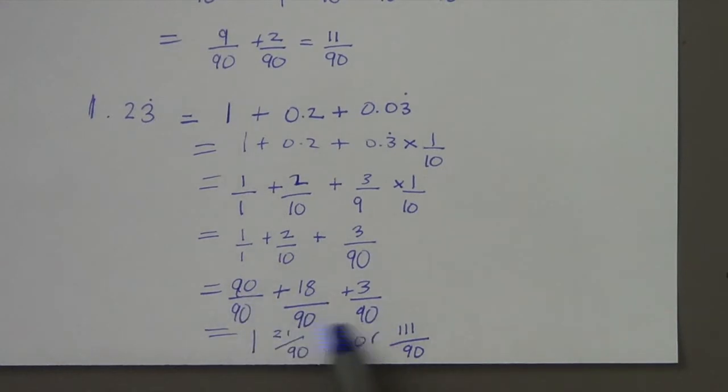And then I can choose to make it an improper fraction like this. 90 plus 18 plus 3 gives me 111 over 90, or I'll turn it into a mixed number, I should say. 1 and 21 over 90. So that's how you convert recurring decimals into fractions.